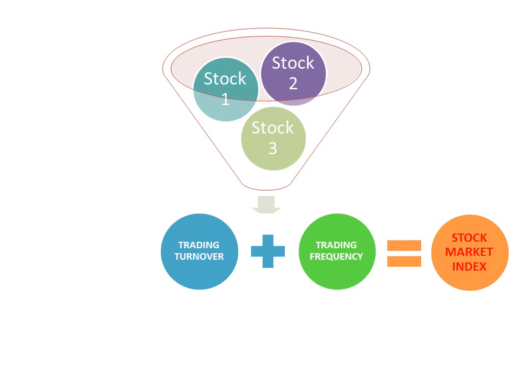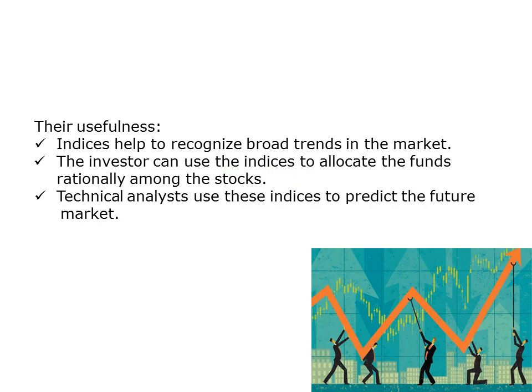How is a stock market index calculated or formed? The stock market or stock exchange selects a group of shares relating to a particular sector or to an entire economy. They consider the total turnover and the trading frequency — that is, the value of the shares and the frequency at which they are traded in the stock market. On that basis, the stock market index value is fixed.